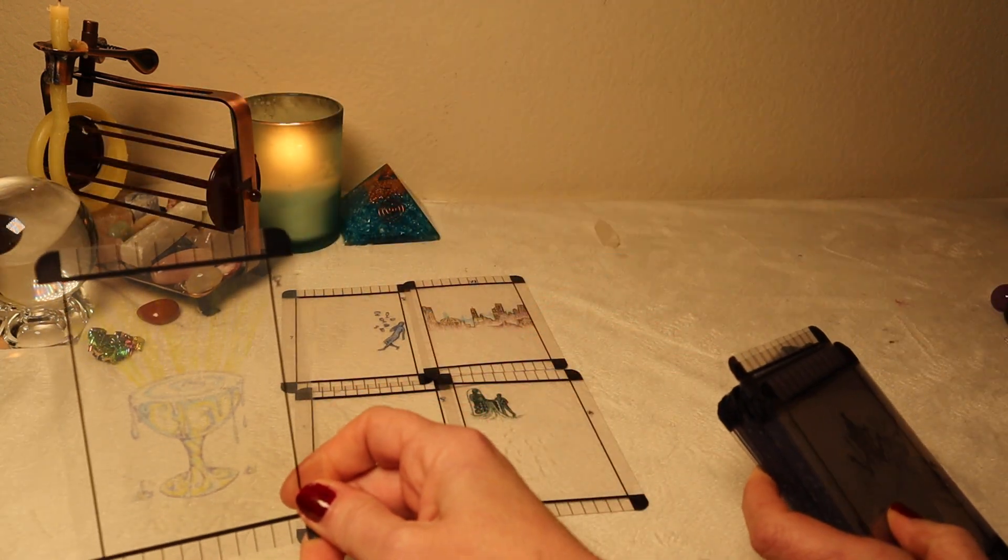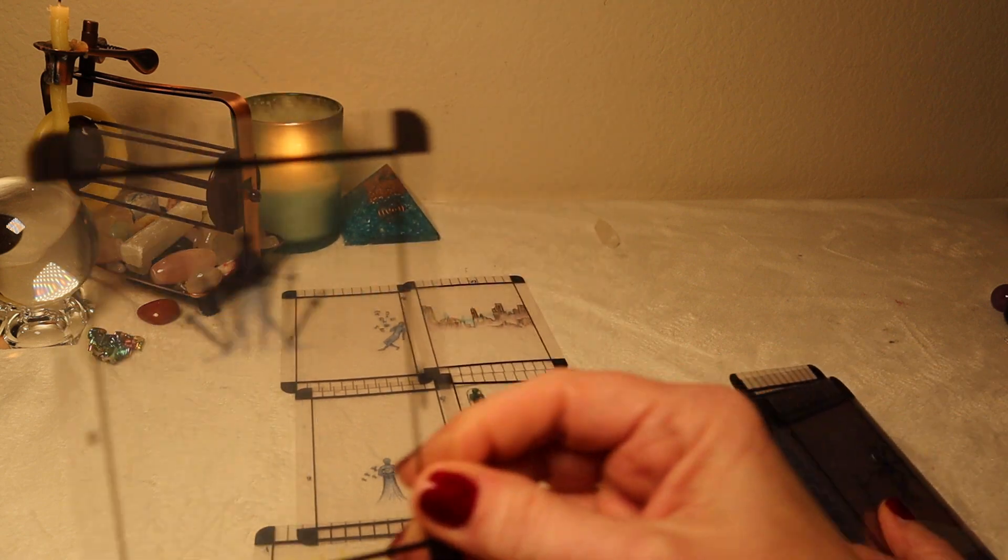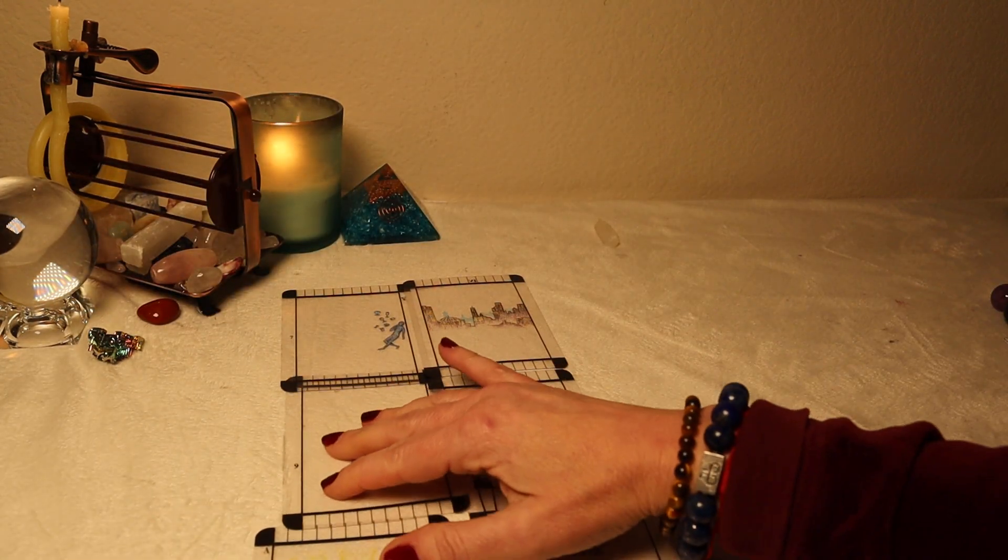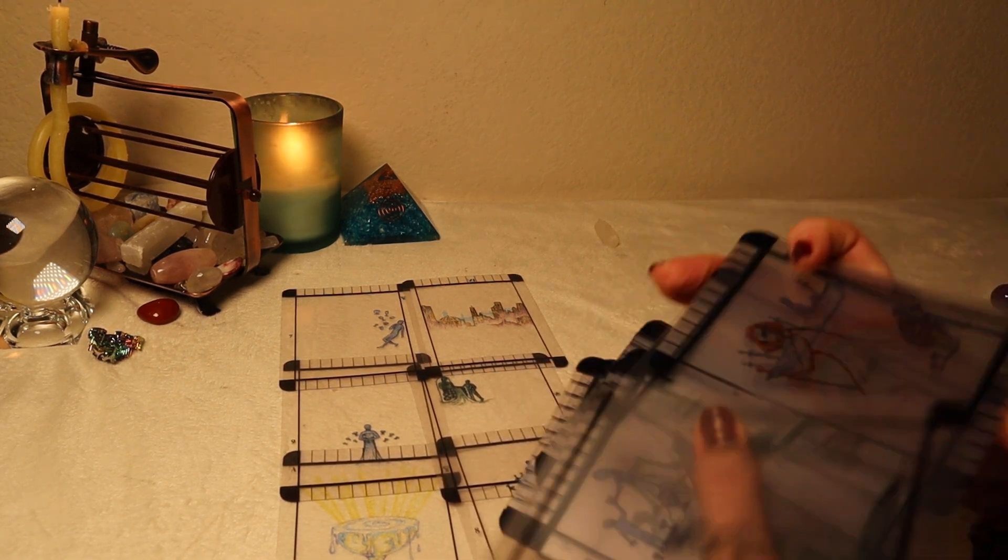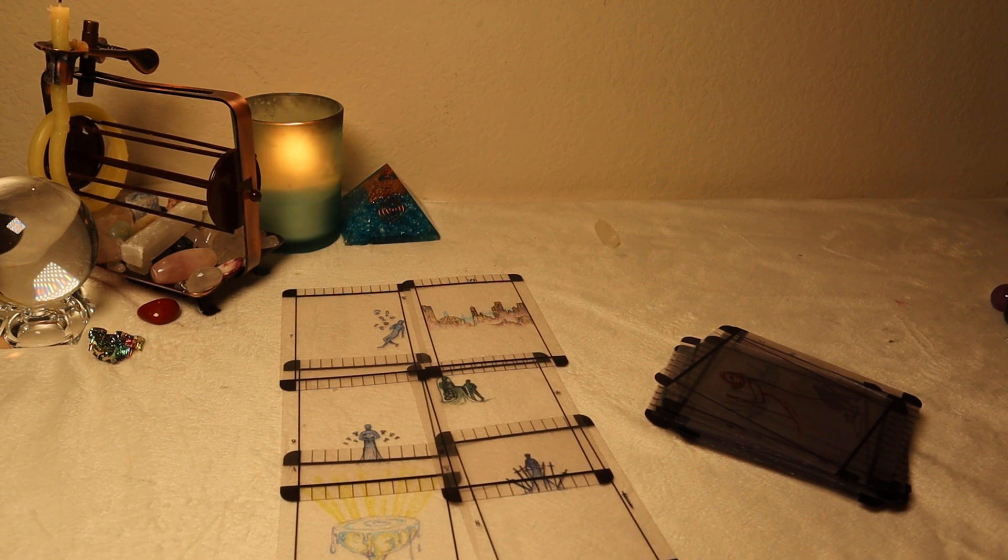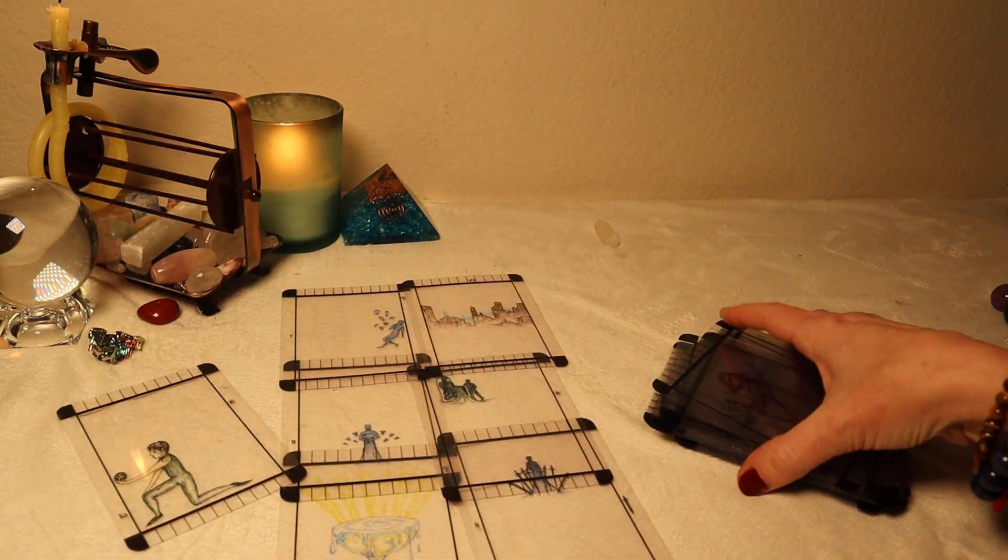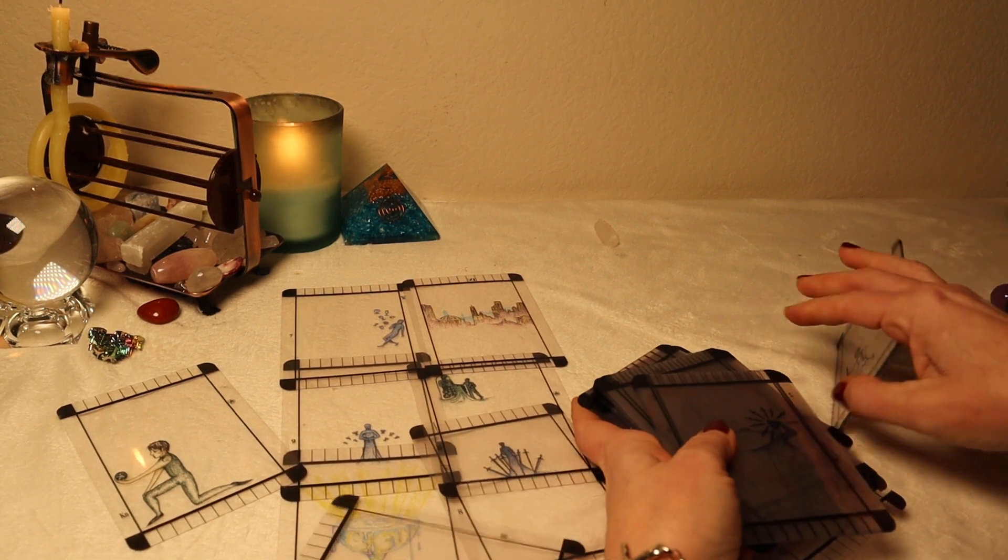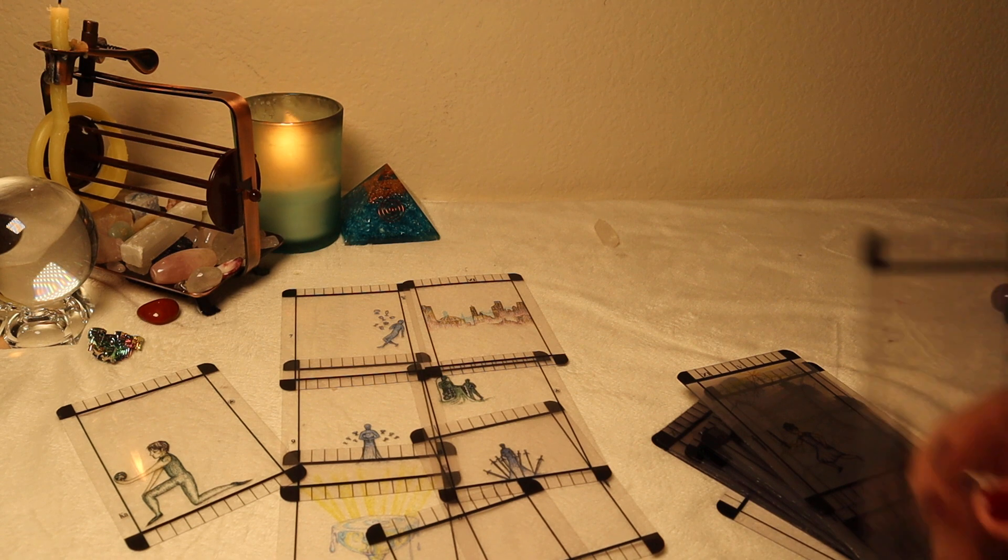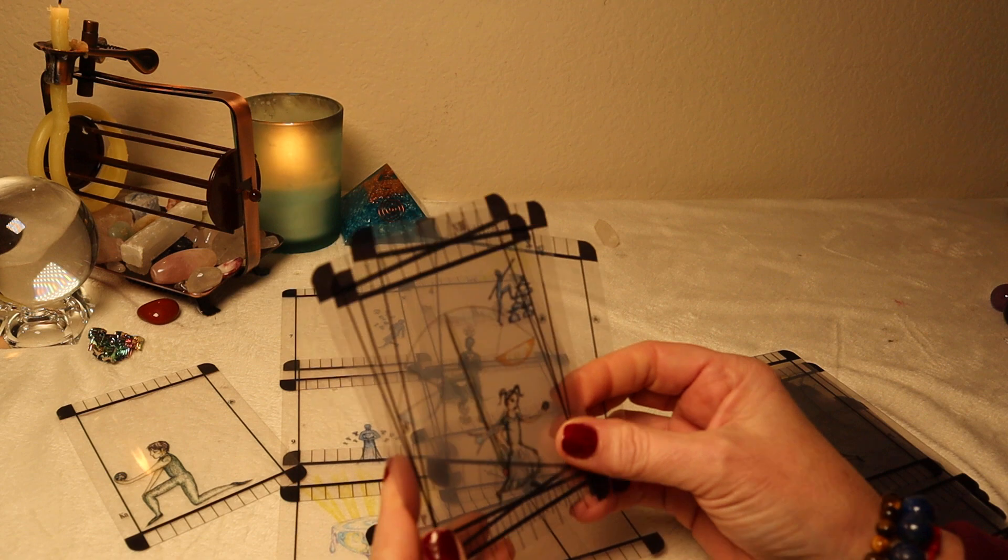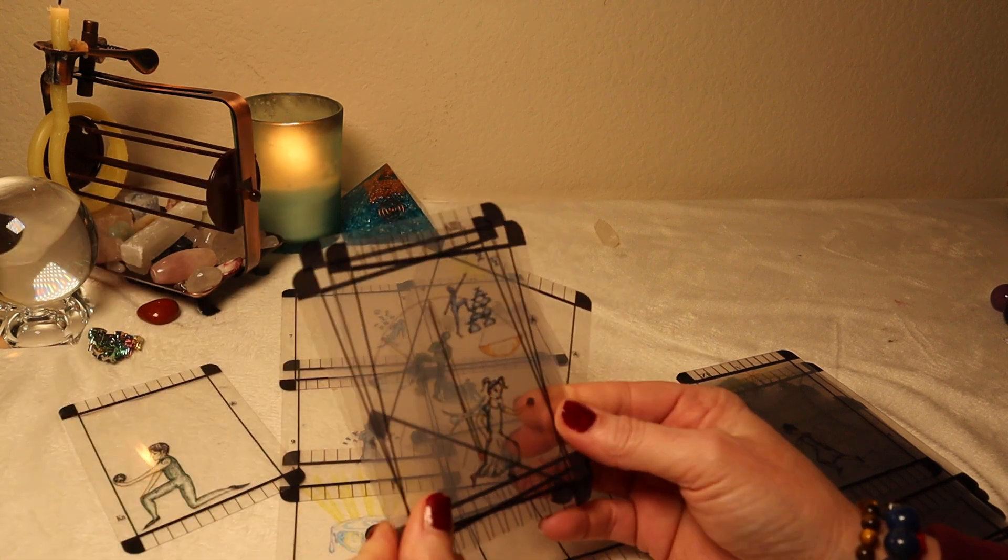Nine of cups is being okay on your own, not needing someone to complete you, being your own cake. Your current energy, Seven of Cups. That is options, keeping your options open. Here's the Emperor. We definitely have, we've got Four of Wands so we've got twin flame indication with that. And then we also have Emperor, Empress. Your person's energy, Ace of Cups.